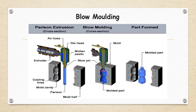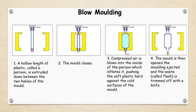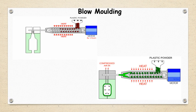The same thing is explained here through simple diagrams. A hollow length of plastic called a parison is extruded down between the two mold halves. In the second step the mold cavities are closed. In the third step, compressed air is blown inside the parison which inflates it and pushes the soft plastic hard against the cold surface of the mold cavity. In the fourth step the mold is opened, the molding ejected, and the waste called flash is trimmed off with the help of knives.